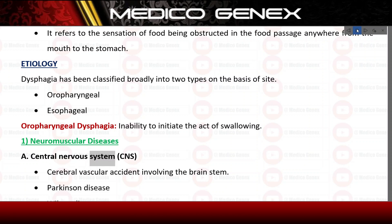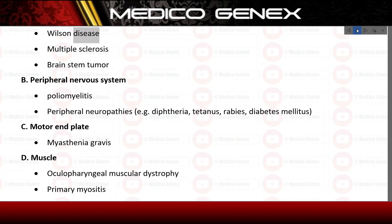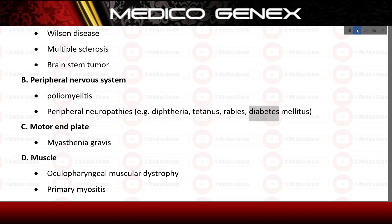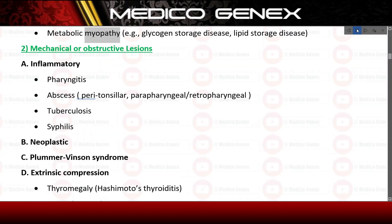Neuromuscular causes include: A) Central nervous system (CNS) — cerebral vascular accident involving the brain stem, Parkinson's disease, Wilson's disease, multiple sclerosis, and brain stem tumor. B) Peripheral nervous system — poliomyelitis and peripheral neuropathies such as diphtheria, tetanus, rabies, and diabetes mellitus. C) Motor end plate — myasthenia gravis. D) Muscle — oculopharyngeal muscular dystrophy, primary myositis, and metabolic myopathy such as glycogen storage disease and lipid storage disease.